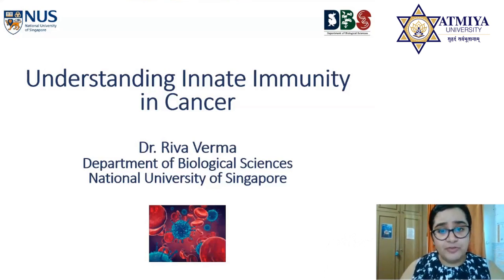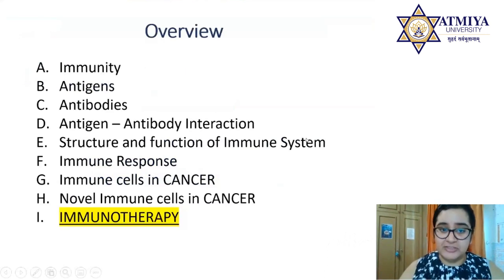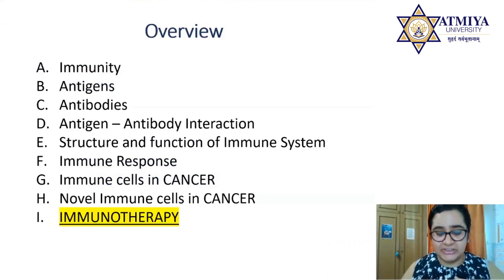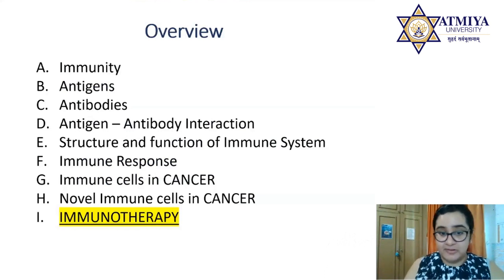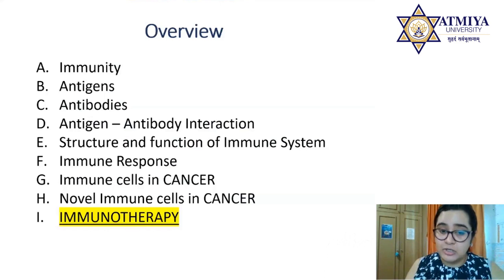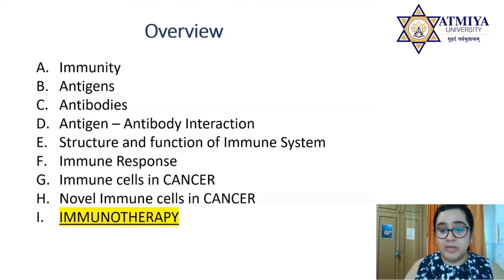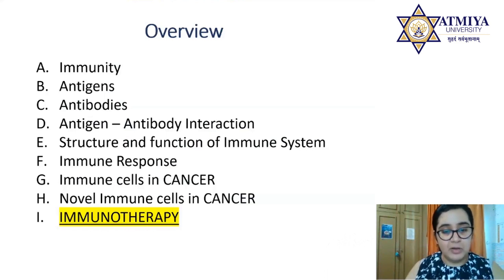A brief overview of what we'll cover today: the basic definition of immunity, types of immunity, and the antigen-antibody interaction that elicits an immune response. Next, the structure and function of our immune system and the different kinds of immune responses. Then cellular immunity and the role of different immune cells — including my PhD work at NUS — followed by immunotherapy, which is basically the development of treatment strategies for cancer.